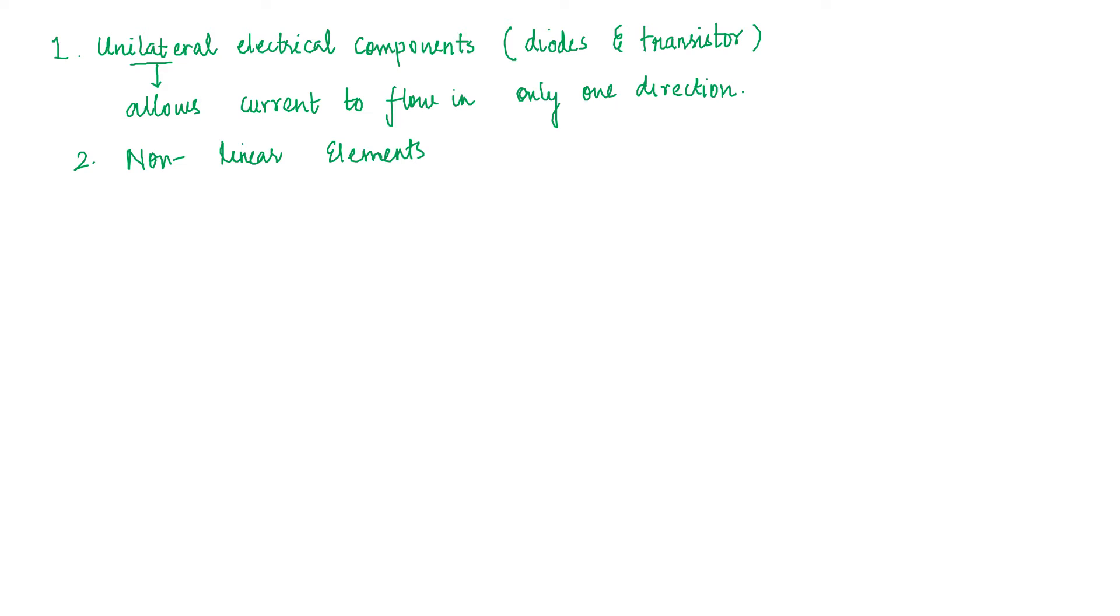Now what does a non-linear element mean? The elements which are like, voltage and current will be always related. So in non-linear elements voltage and current are not exactly proportional. Applied voltage and current do not show exact proportional relationship.